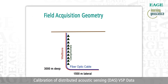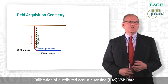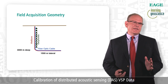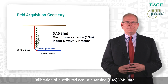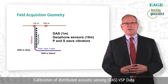This diagram shows the acquisition geometry for the field data I'll be showing. The red line indicates the well trajectory. The vertical section of the well extends to a depth of about 3,000 meters. The lateral section of the well is another 1,500 meters long. The fiber optic cable, shown in blue, runs the entire extent of the well and is cemented outside the casing. We collected geophone data in the vertical section of the well, shown by the green triangles. The channel spacing of the DAS data is 1 meter, while the geophone sensors are about every 15 meters. We used both P-wave and shear wave vibrators. We acquired three source offsets: a nominal zero offset at 116 meters, a mid offset at 750 meters, and a far offset at 1,500 meters.